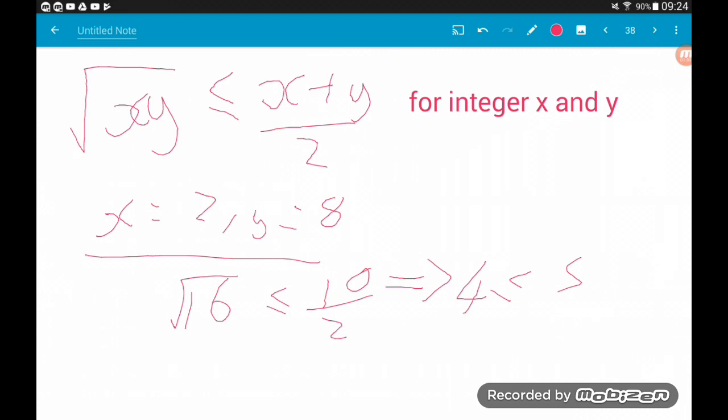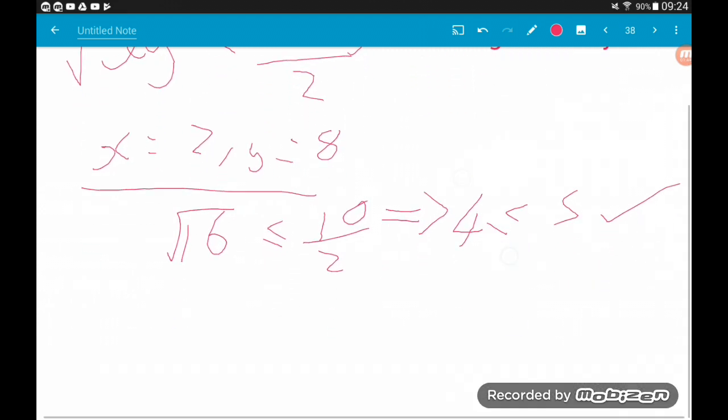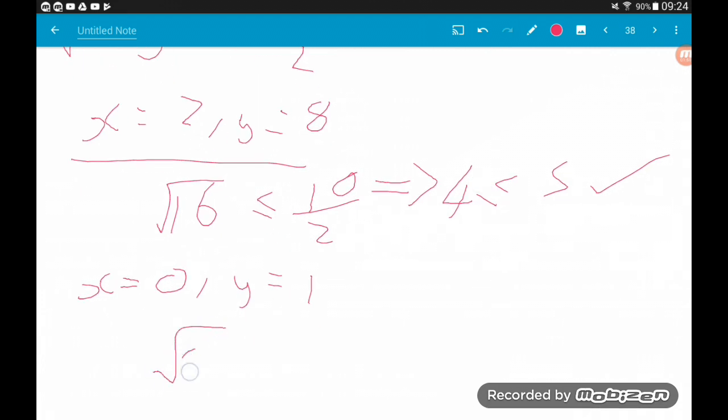So what we've got here then is 4 is less than or equal to 5. Now that works. 4 is less than 5, so that's fine. What about let's try when x and y are zero? In fact, let's just try when x is 0 and y is 1. What are we going to get then? Well, we're going to get the square root of 0 on the left, and then we're going to get 0 plus 1 over 2, so that's going to give us a half. Root 0 is just 0, so 0 is absolutely less than or equal to one half. So that works.